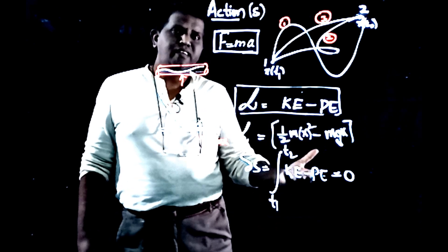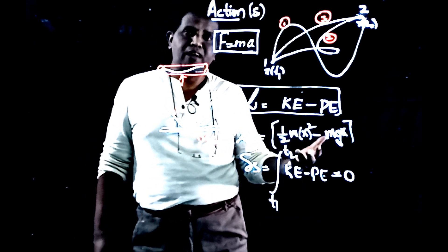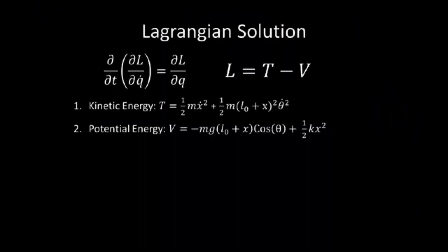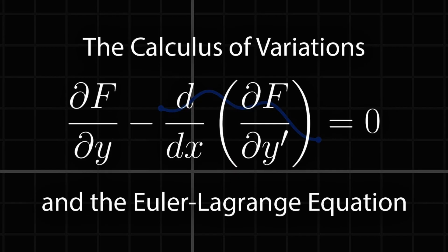One is Lagrangian mechanics in physics. The other branch of interest which evolved from this is calculus of variations — not simple calculus, but calculus of variations. Thank you.